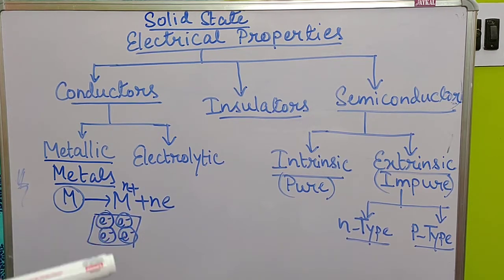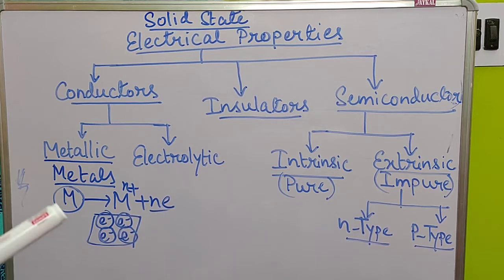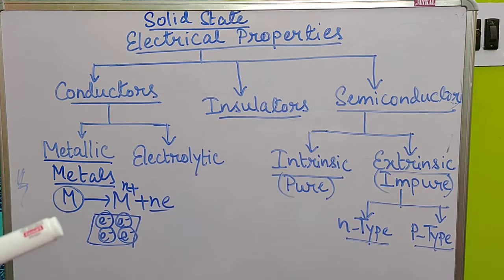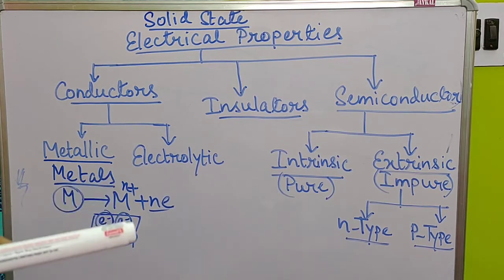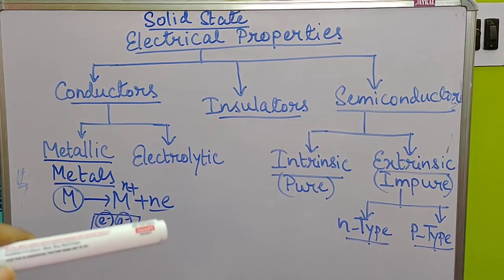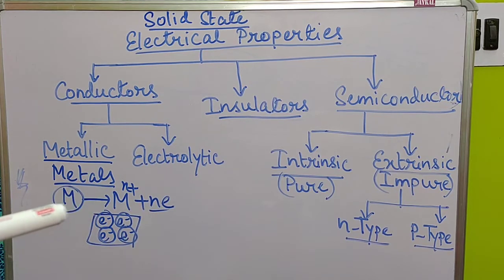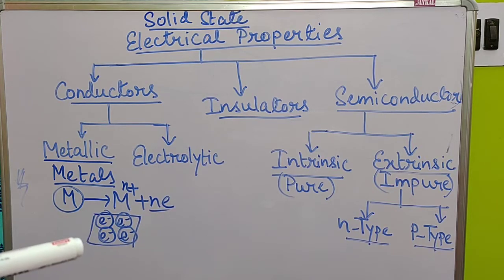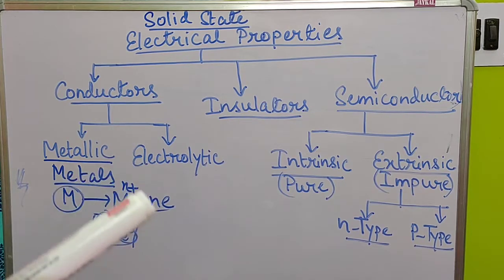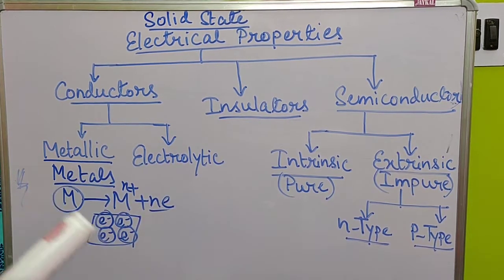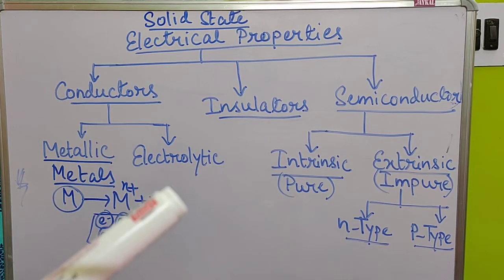As they are charged particles, they can conduct electricity. The first type of conductor — metals — can conduct electricity without any permanent chemical change, because the metal makes a cation and the cation can again accept the electrons to reform the metal. That reaction is reversible in nature, so no permanent chemical change takes place. This is the metallic conductor.